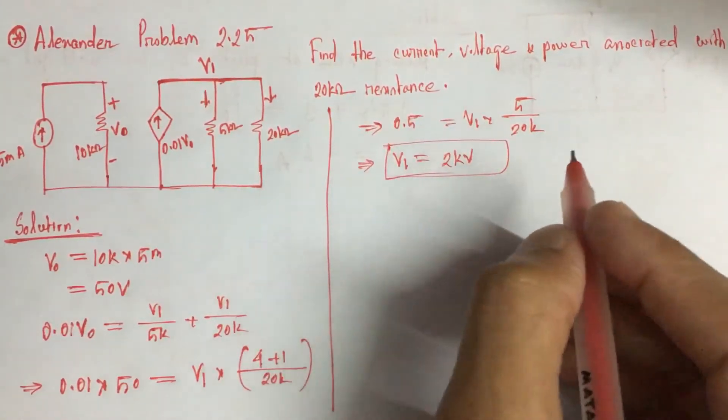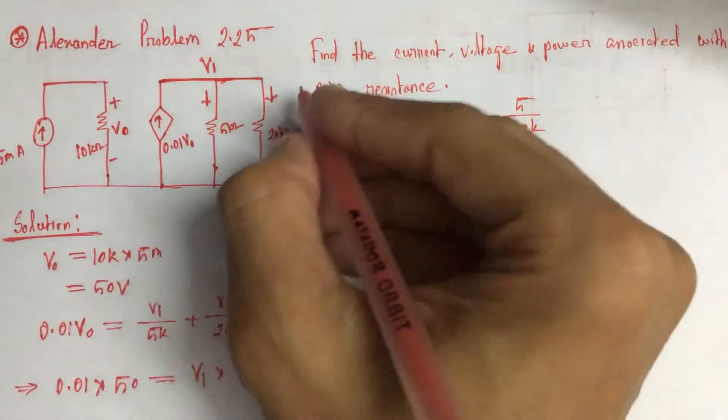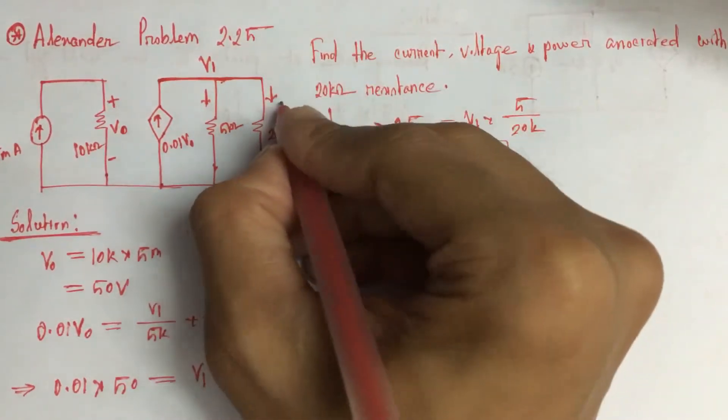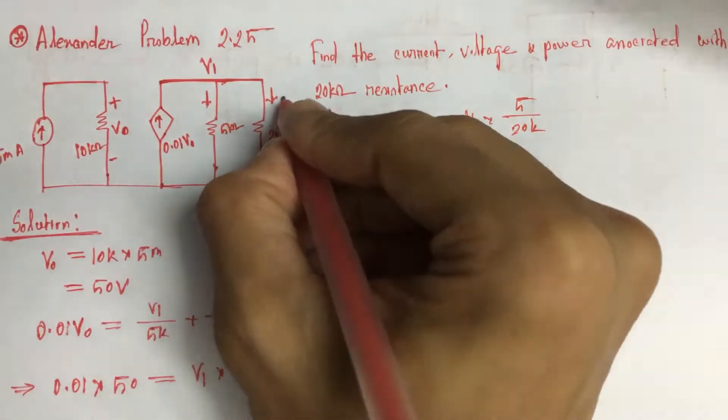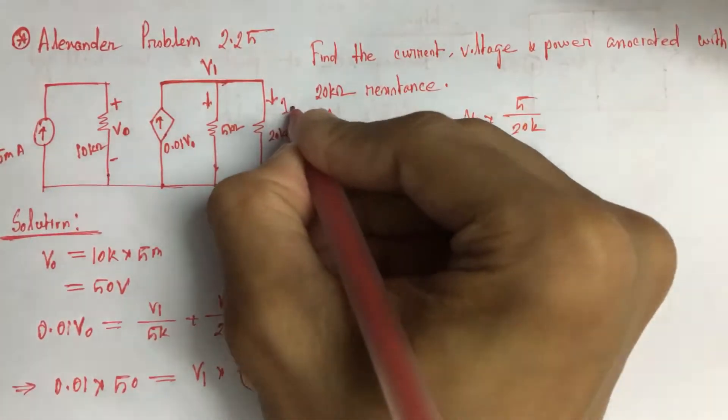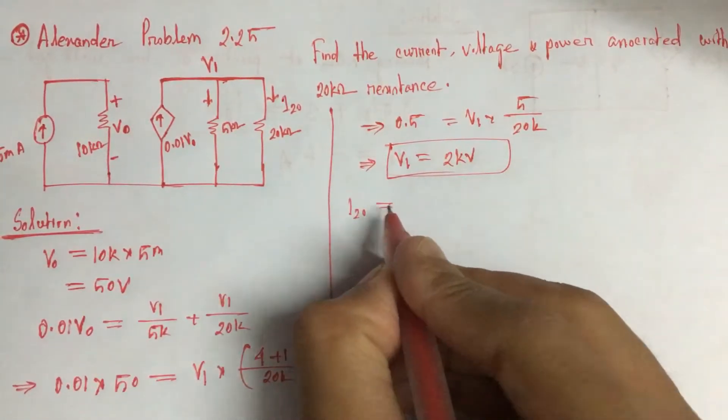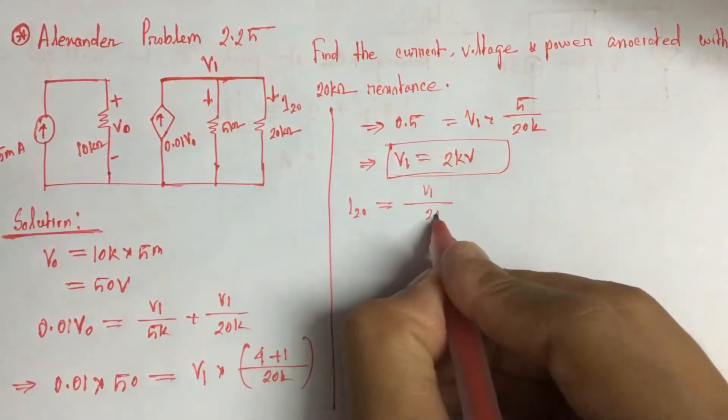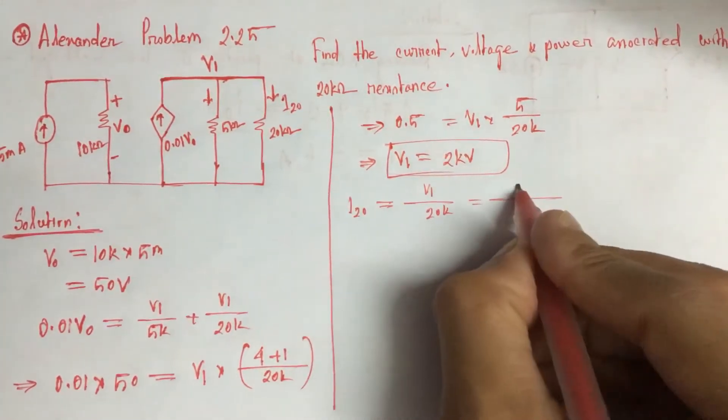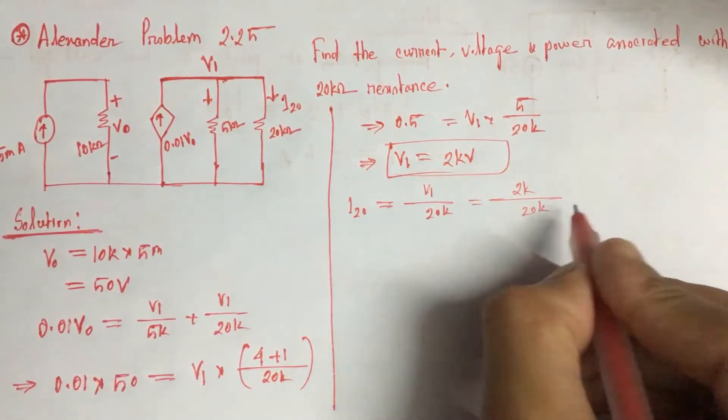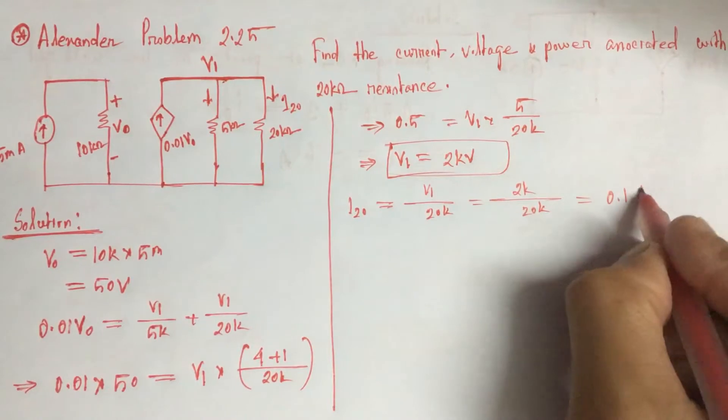This is one of the answers. Now, the current through this 20 kohm resistance: the value of current I20 is equal to V1 by 20 kohm, that is 2 kohm by 20 kohm, which is 0.1 ampere.